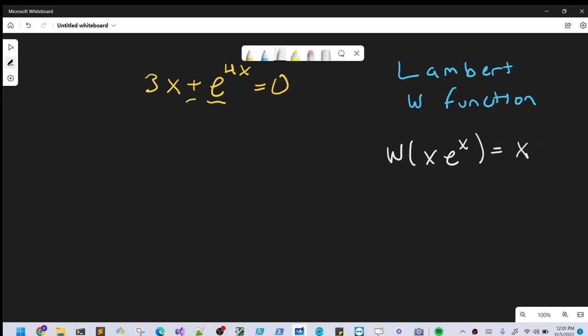If we have this exponential problem on the board, we have 3x plus e to the 4x equals 0. We want to try to solve this using the Lambert W function.